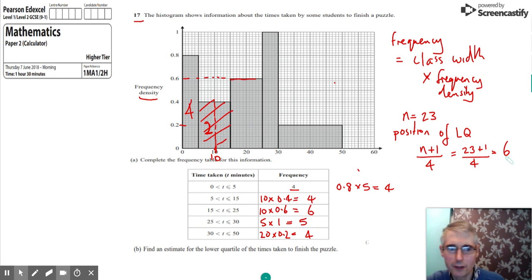So just to repeat that or explain that again, we know the position of the lower quartile is 6. And what that means is we've got six pieces of data that fall below the lower quartile. And we can see there's four in this first group.